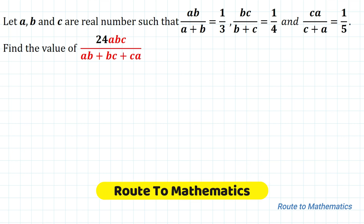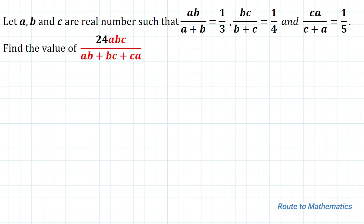Hello everyone, welcome to Root to Mathematics. In this video we're going to solve an interesting algebra question. The given question is: let a, b, c be real numbers such that ab divided by a plus b equals 1/3, bc divided by b plus c equals 1/4, and ca divided by c plus a equals 1/5. Find the value of 24abc divided by ab plus bc plus ca.